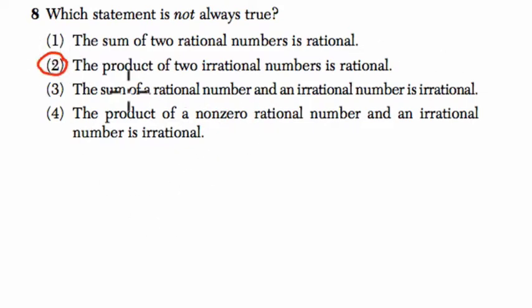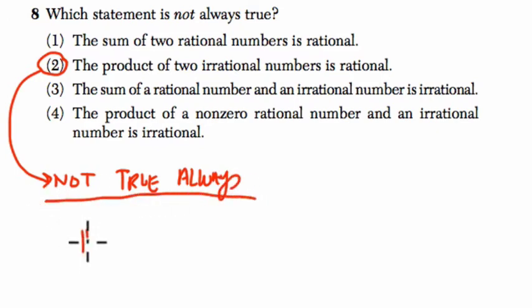Let's talk about why. Why is the product of two irrational numbers not always rational? So it's not true always. So first of all, it can happen. It can happen that if you take, for example, π, and you multiply it by π, you get π². π² is still irrational.